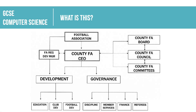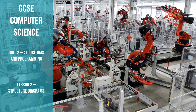Hello and welcome to this latest lesson in the OCR GCSE computer science section of work. Today's lesson is looking at structure diagrams and there is an example of a structure diagram on your screen. This is the second lesson in the algorithm section of work and this makes up part of unit 2 algorithms and programming.